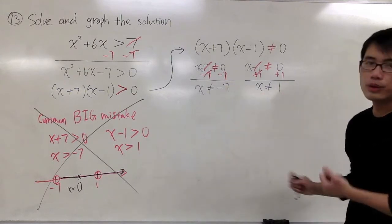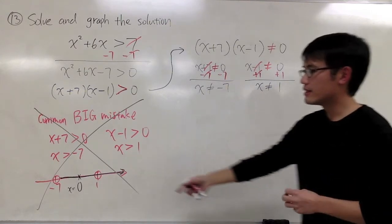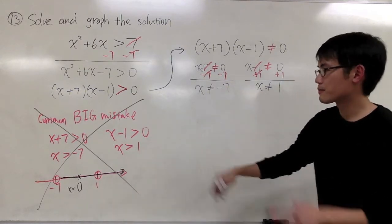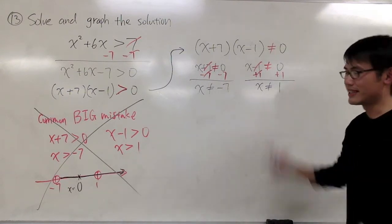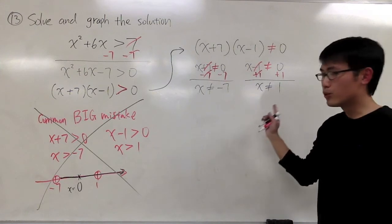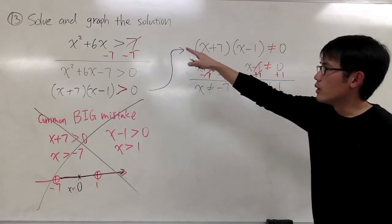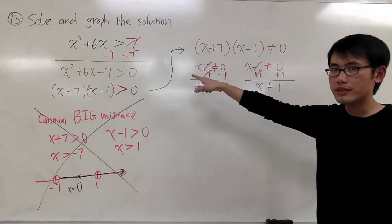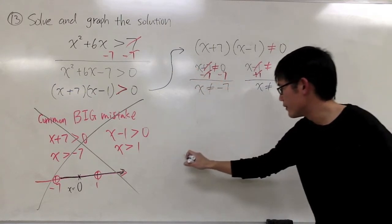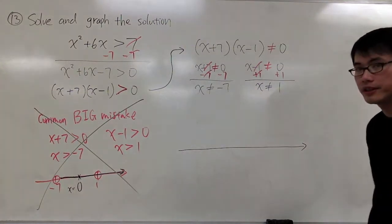These two are the crucial points. And in fact, that's what we got over there as well. But once again, don't look at that. Do it like this. These are the two crucial points, and usually we also have to graph the solutions for inequalities. Let's come up with a graph right now. Get the number line ready.